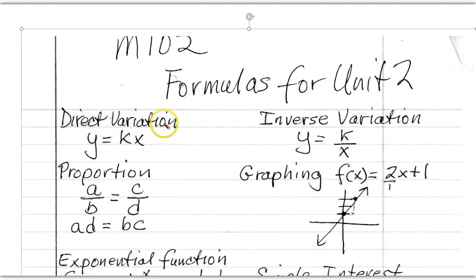We have here direct variation where we use the formula y equals kx, and often what we have to do is solve for k. They're going to give you a y value, or something that would be out here, and they're going to say something is in direct proportion or variation to something here. You solve for k by dividing both sides by x, and that gives you your new k.